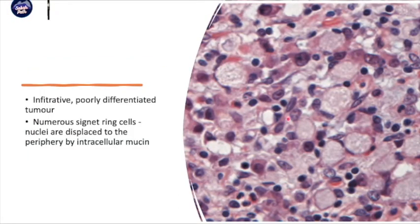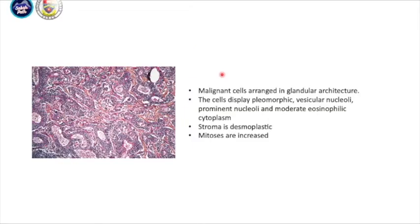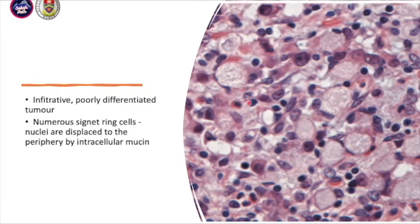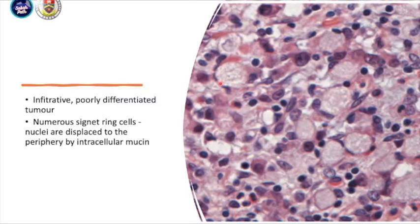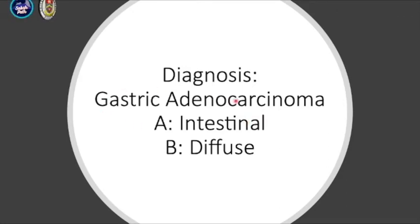For the second biopsy pattern, it is infiltrative with no glandular formation, meaning it is a poorly differentiated tumor. You have numerous signet ring cells — where mucin is at the center and the nucleus of the malignant cell is pushed to the periphery. The diagnosis is gastric adenocarcinoma: the first pattern is intestinal type, and the second is diffuse type.